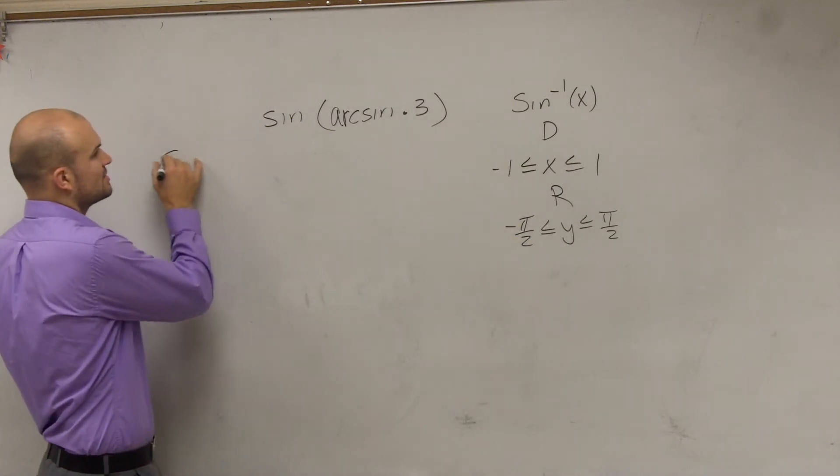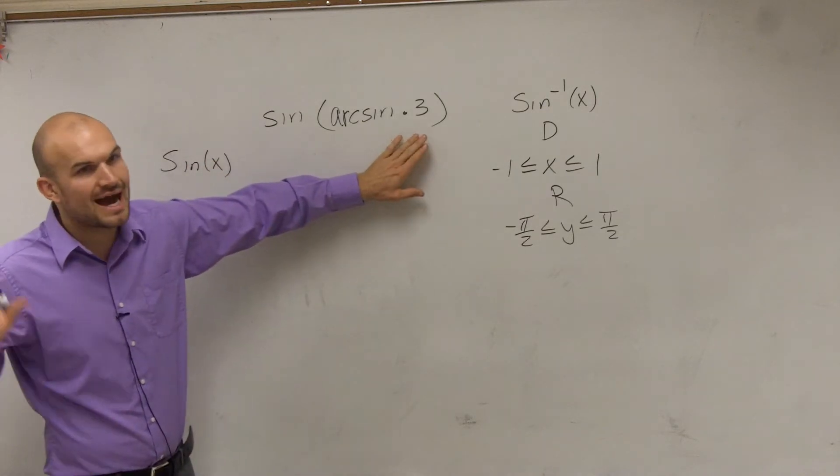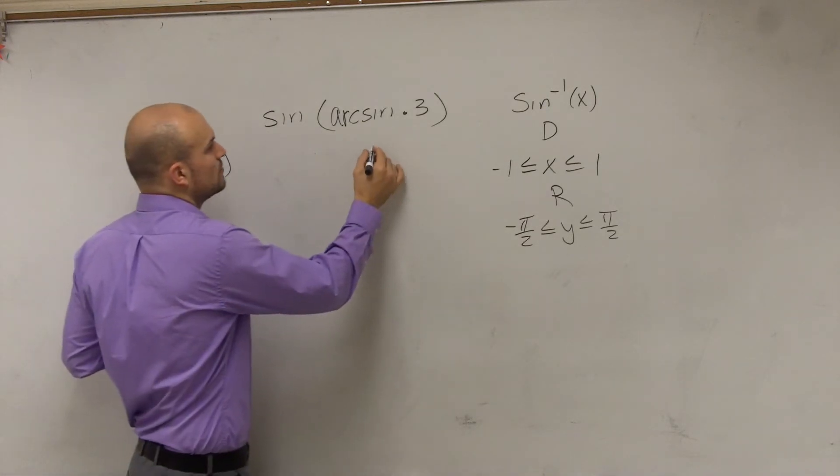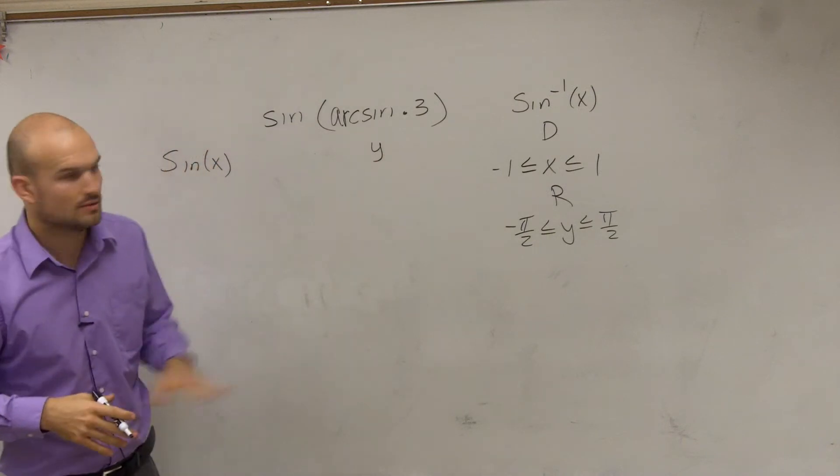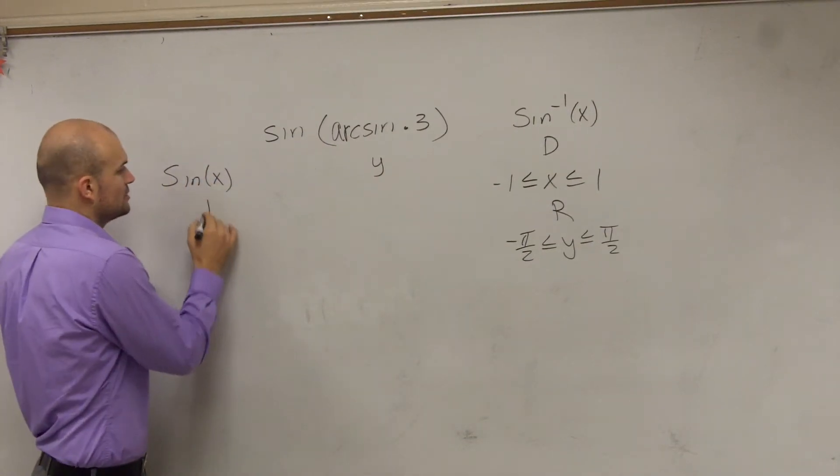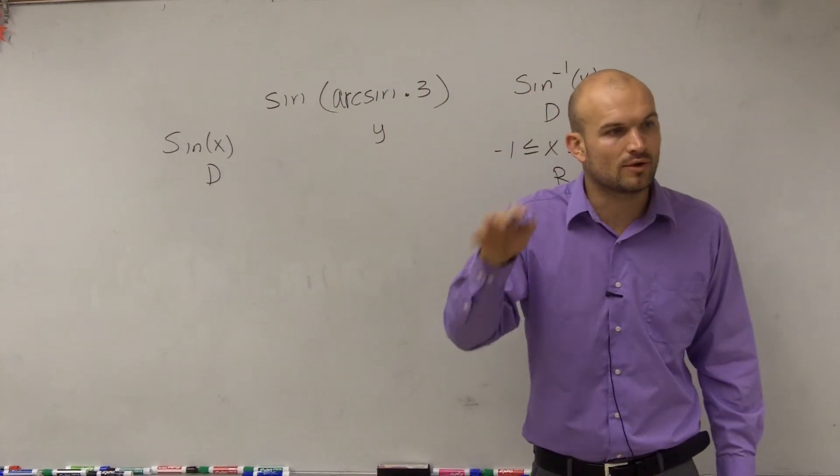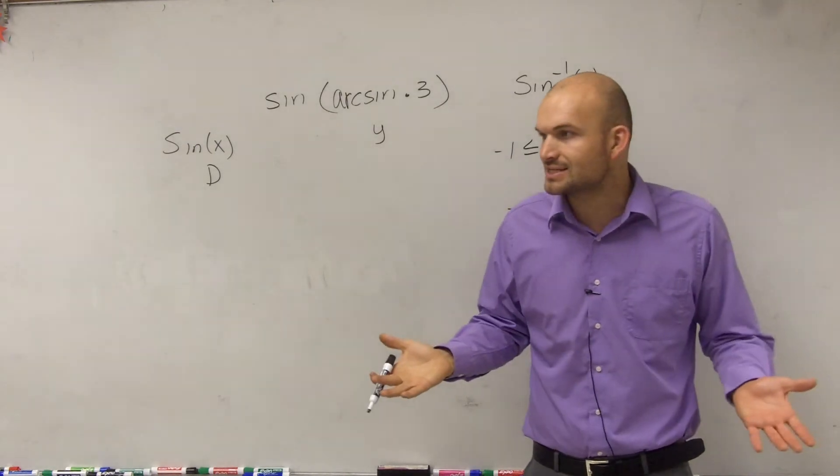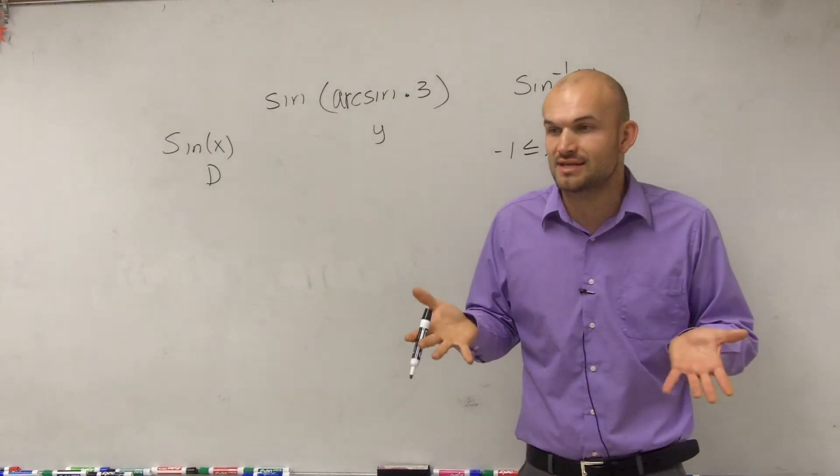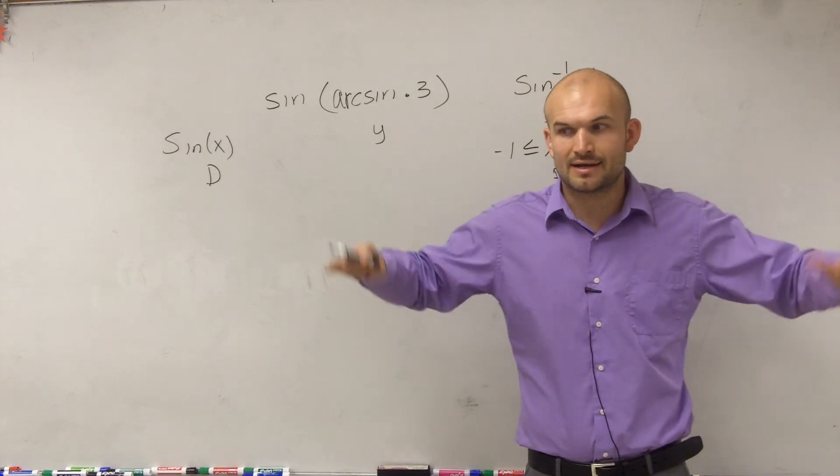And let's look at just the sine of x. So whatever we figure out this value is, I don't know what it is. Let's call this value y, whatever inverse sine of 0.3 is. Sine of x - the domain of sine of x. If you guys look at the sine of x problem, what is the domain? Is there any values of x that cannot be part of the sine function? Does it go on and on and on forever?